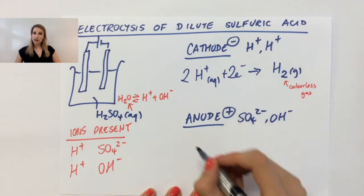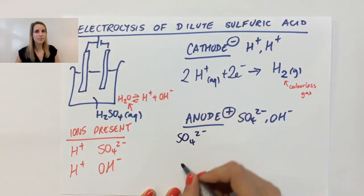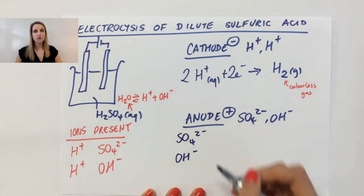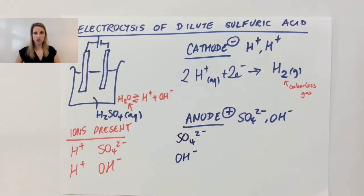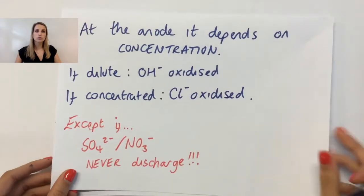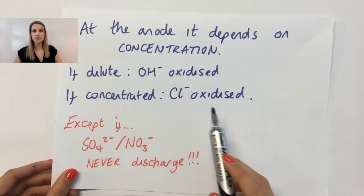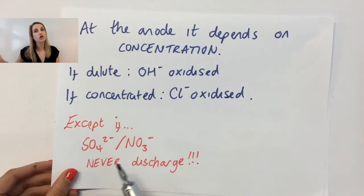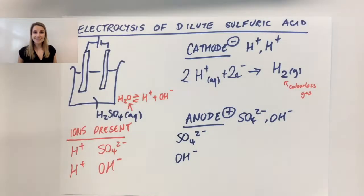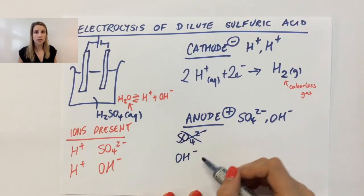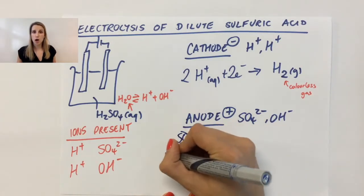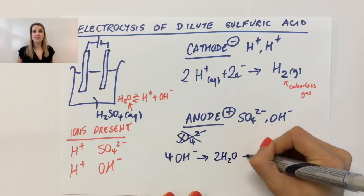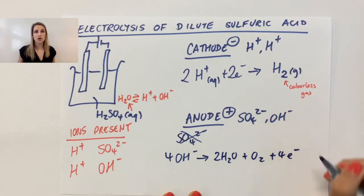At the anode, however, I have a choice, and choices are what make this part difficult. I've got the sulfate ion and the hydroxide ion. Now if I look back at my rules about what happens at the anode, it's normally based on concentration. But in this case, I've got a sulfate, and the rule says that sulfates never discharge. They will never be oxidized at the anode. So that means it must be the OH⁻ that gets oxidized, making water and O₂.